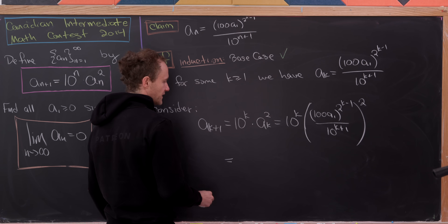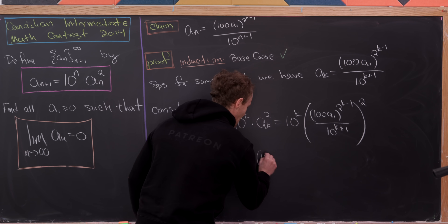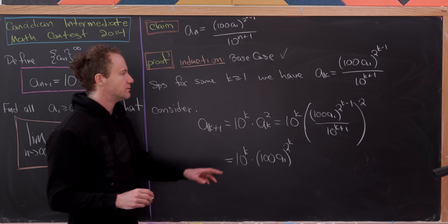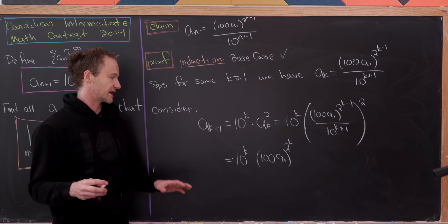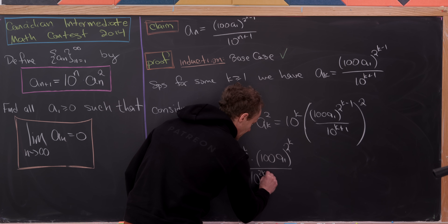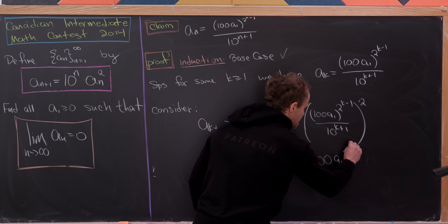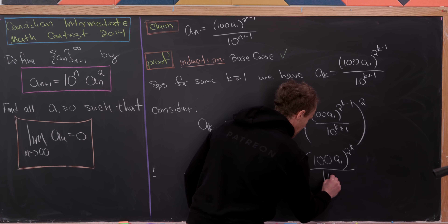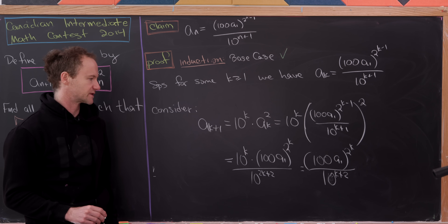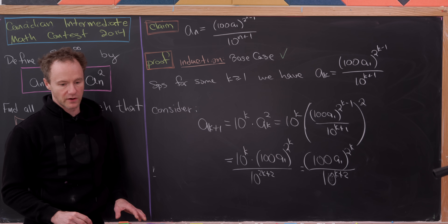Bringing the square inside the parentheses, we still have 10^k out front, then 100 · a_1 raised to 2·2^{k-1} = 2^k in the numerator, and 10^{2k+2} in the denominator. This gives us (100 · a_1)^{2^k} / 10^{k+2}, which is exactly (100 · a_1)^{2^k} / 10^{(k+1)+1} as needed. So the closed form is proven.